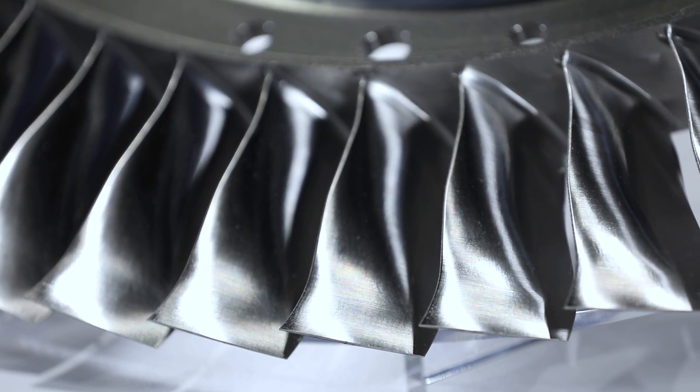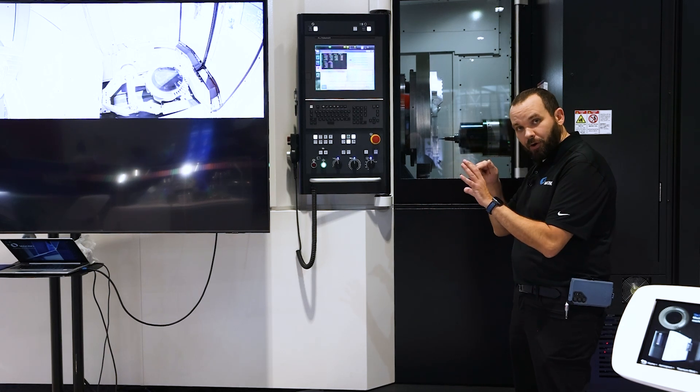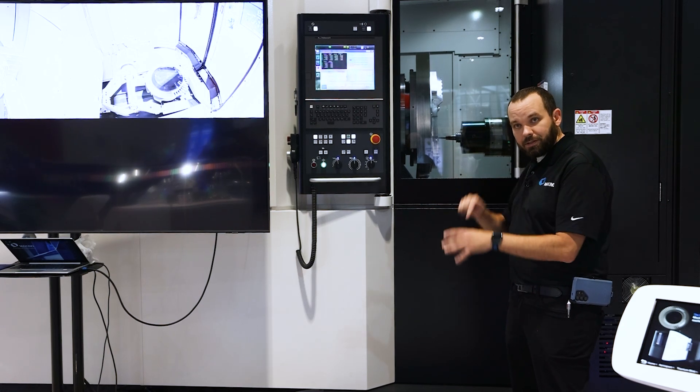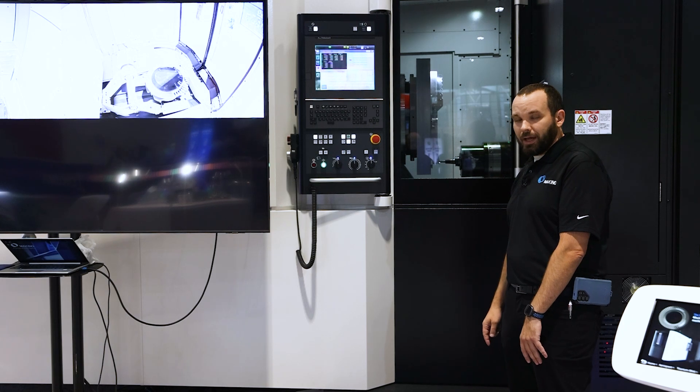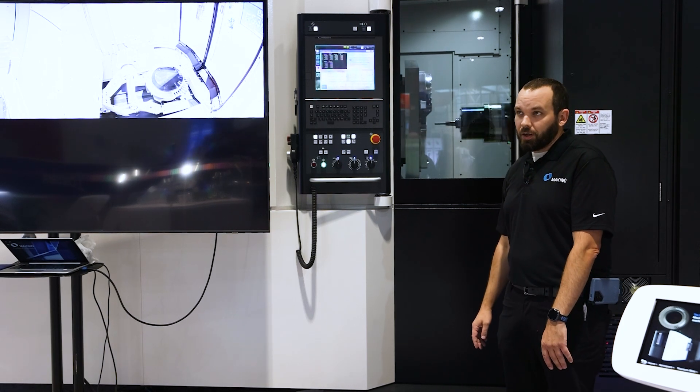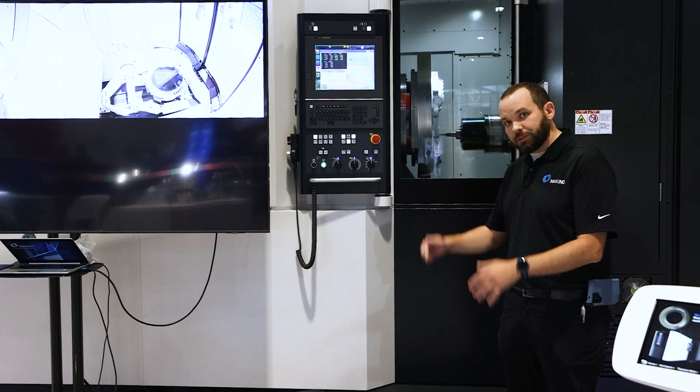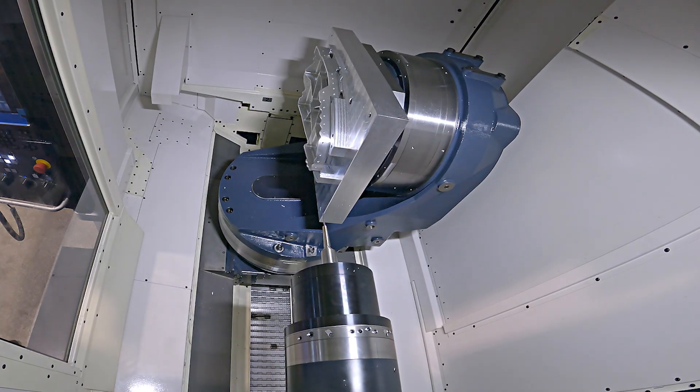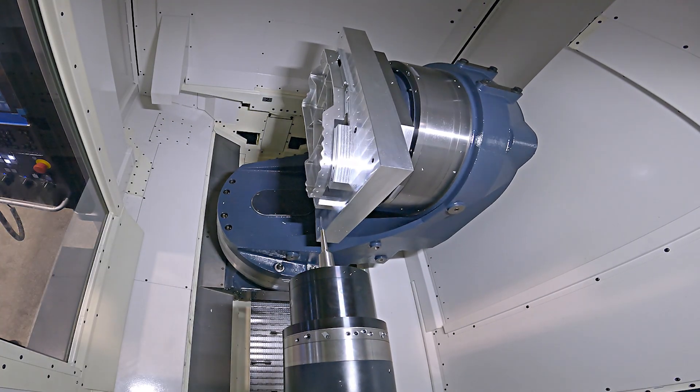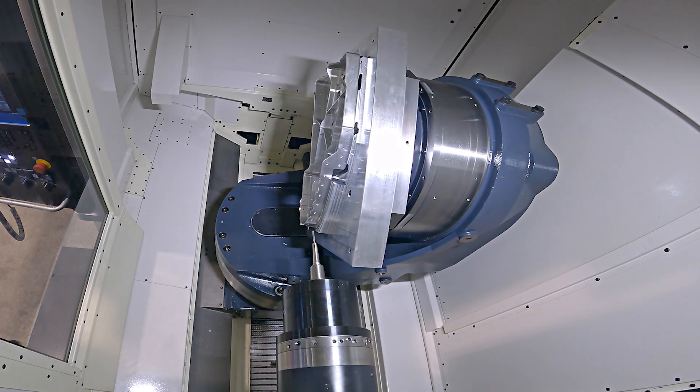One of the benefits of this machine is access to the part, being able to reach around all sides of the part and get access to it. One of the challenges we have on certain machine kinematics is being able to reach all features of the part. So this machine helps solve some of those challenges. We have a couple spindle offerings based on different material types available.